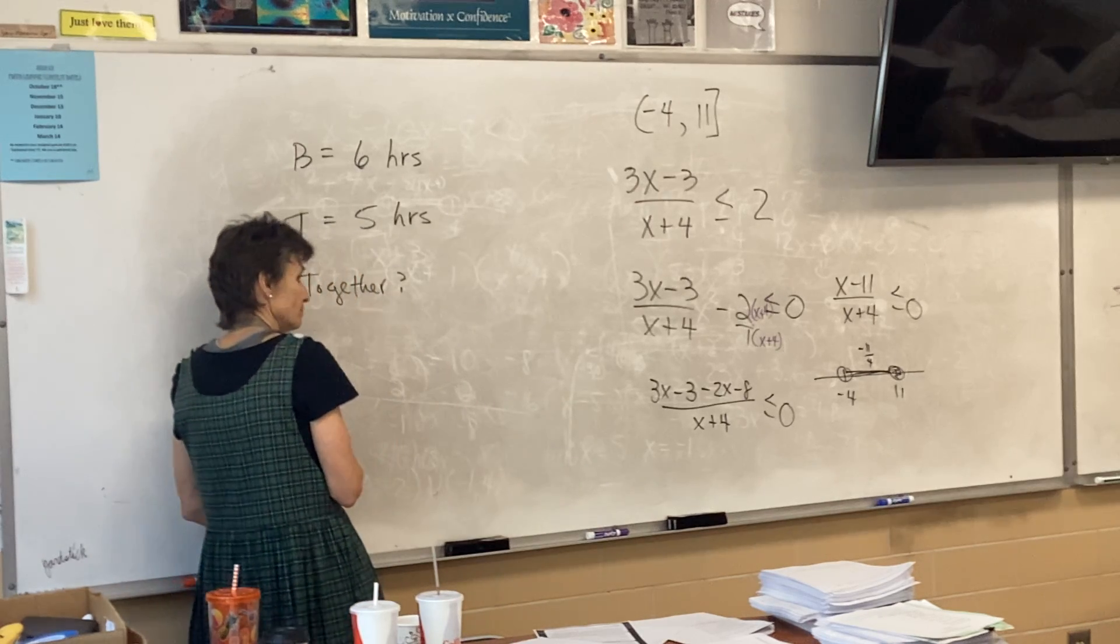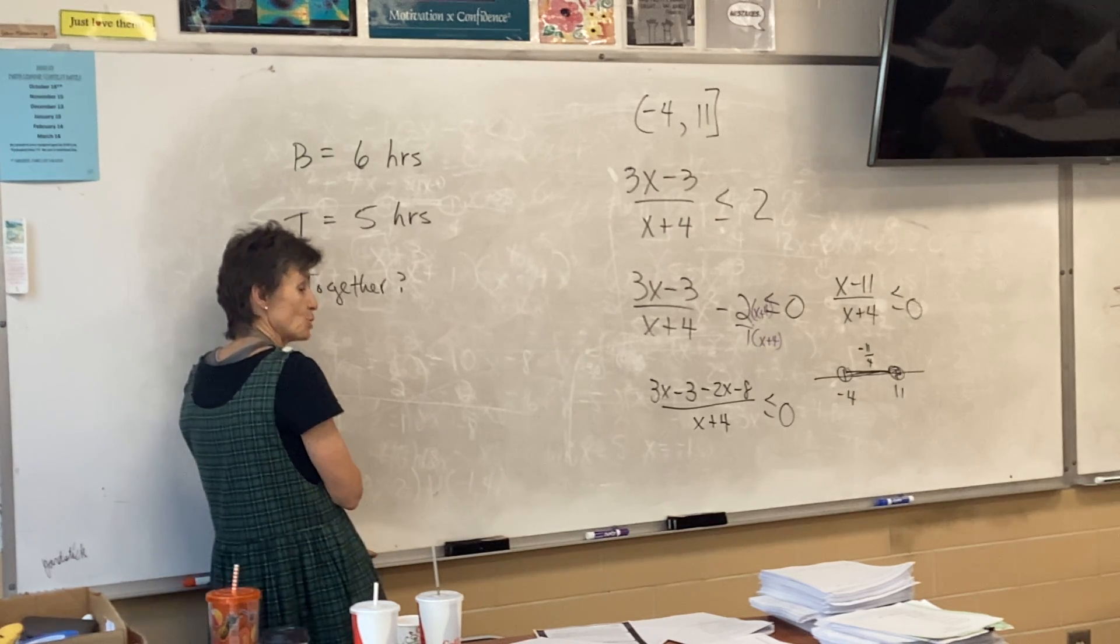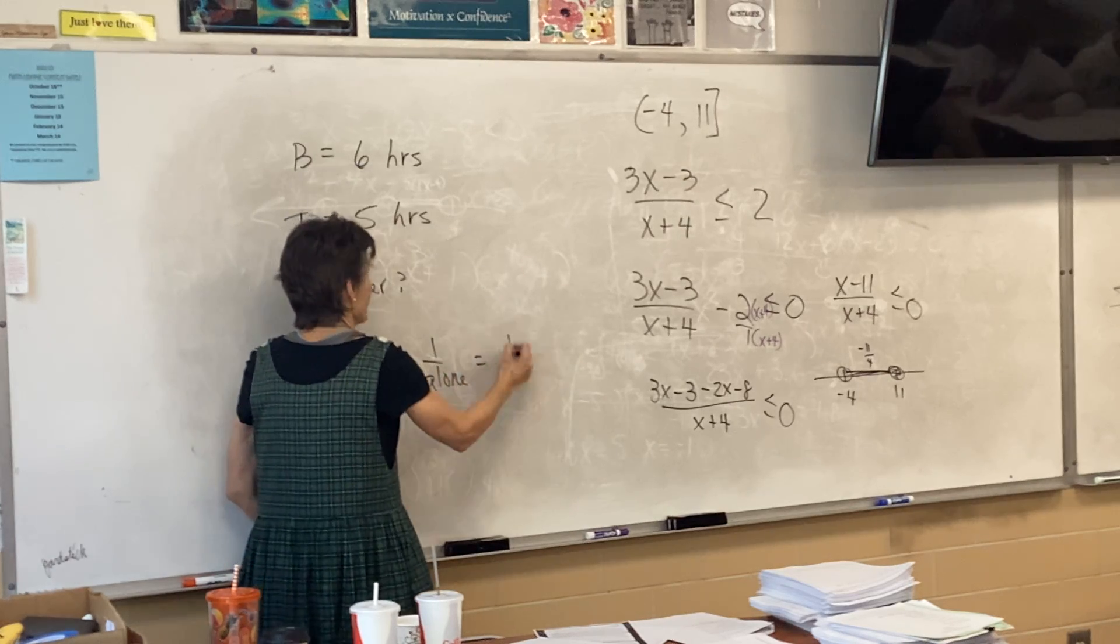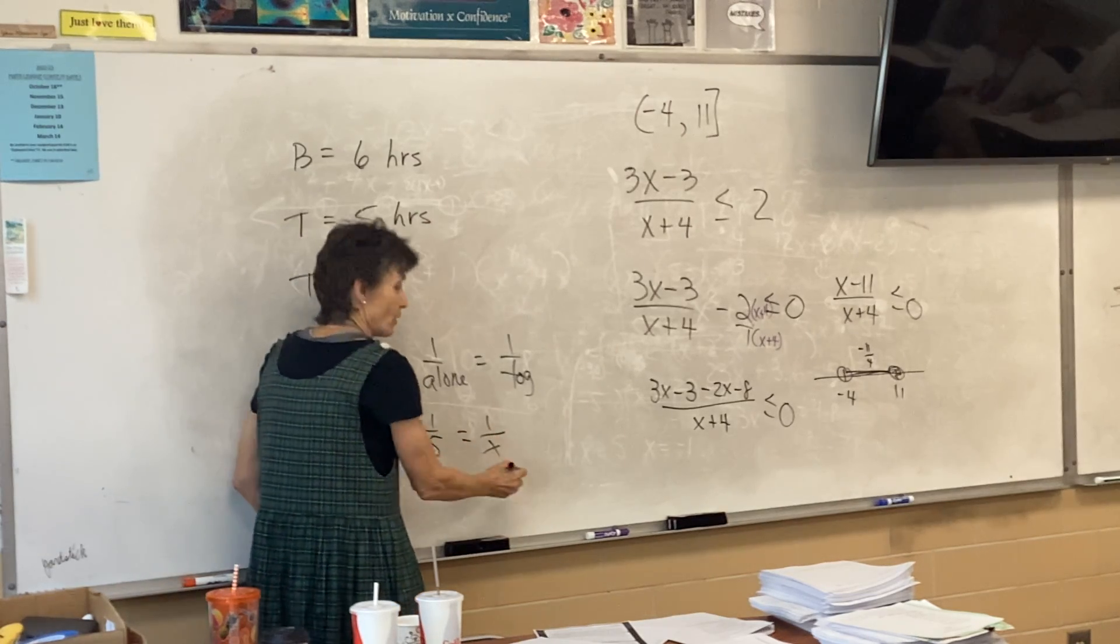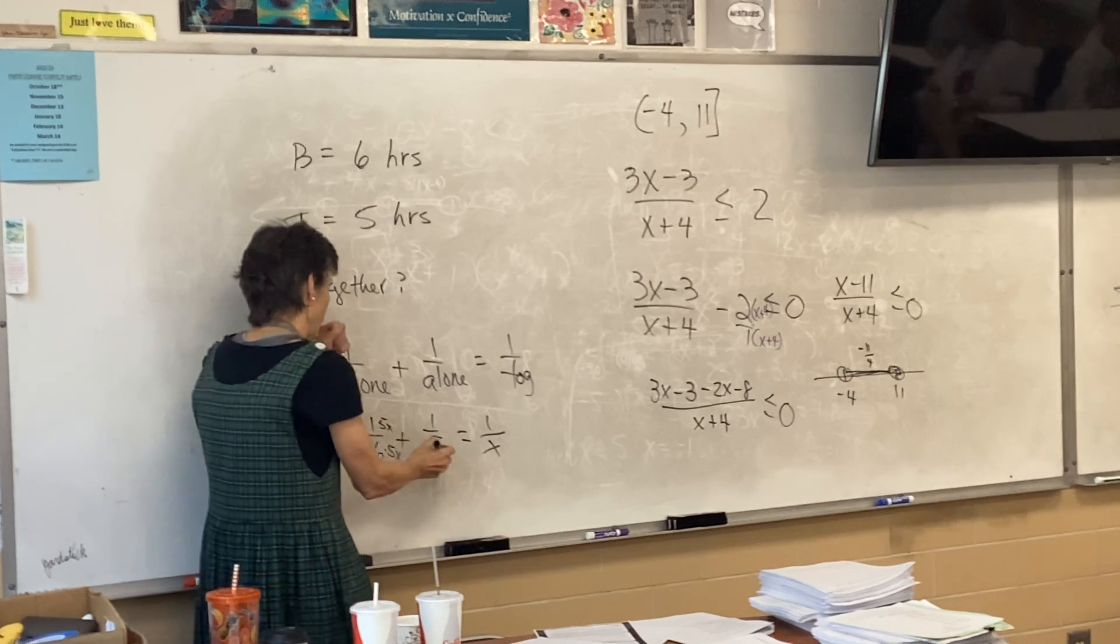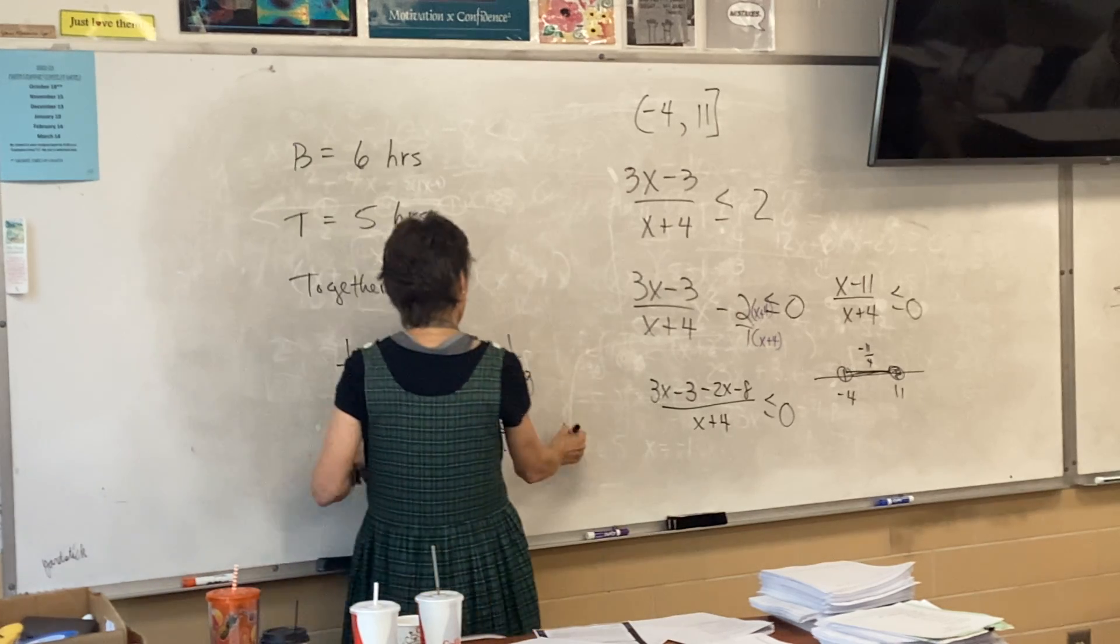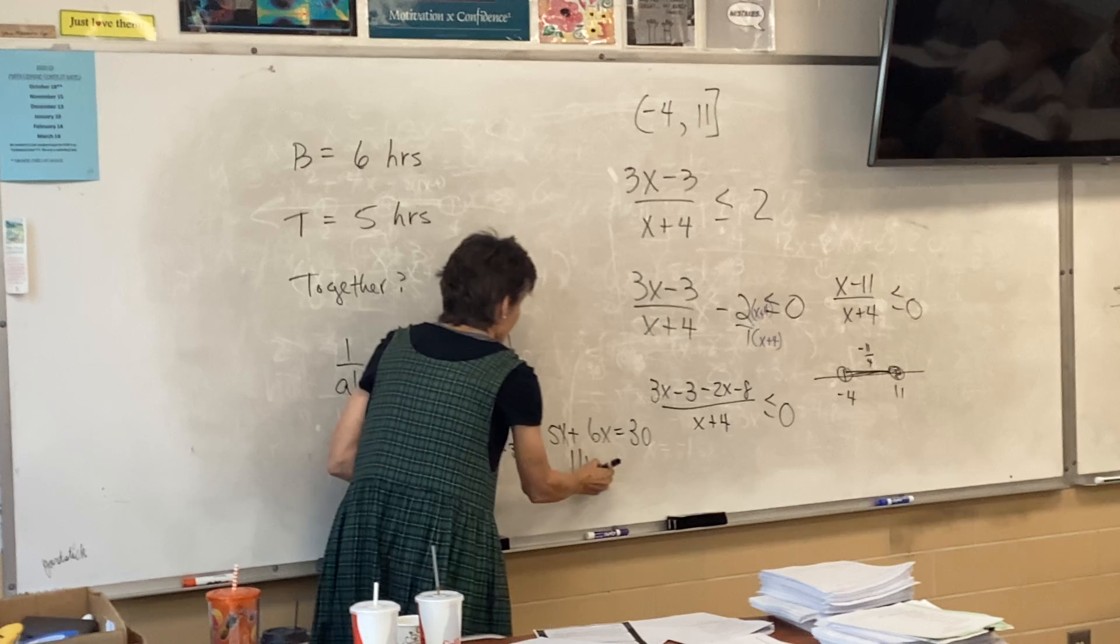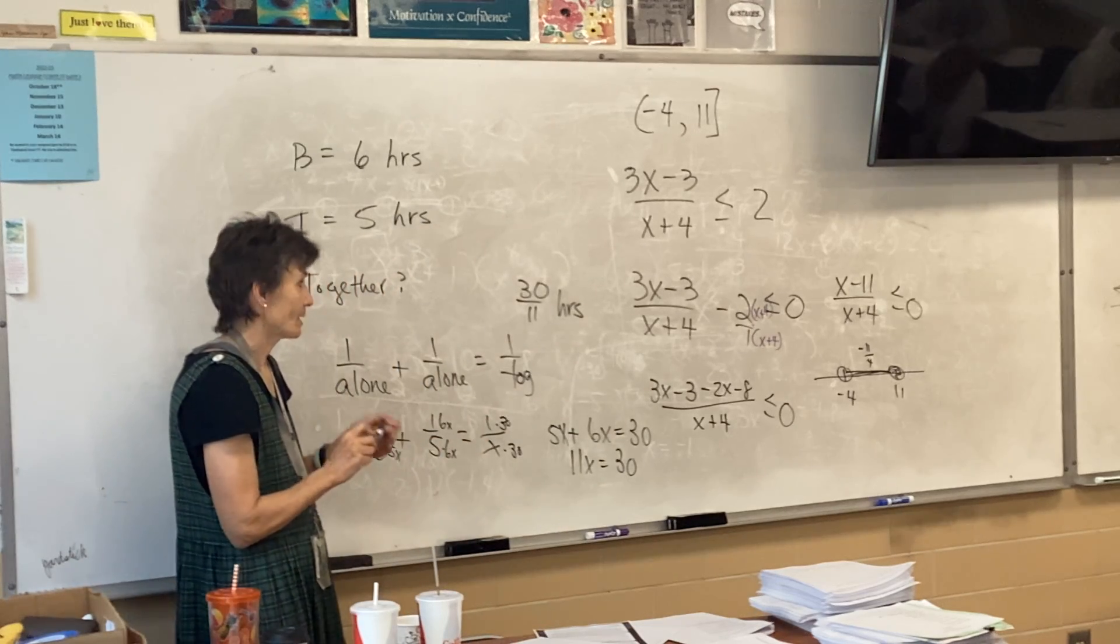Clayton, got an equation for me? Somebody remind Clayton, what's our general formula for one piece? One over six plus one over five equals one over x. One over alone plus one over alone equals one over together. So in this problem, one over six plus one over five equals one over x. So how do we solve it? Common denominator, so five x here, six x here, and 30 here. Five x plus six x equals 30. Eleven x equals 30. Did anybody else get 30 eleventh hours?